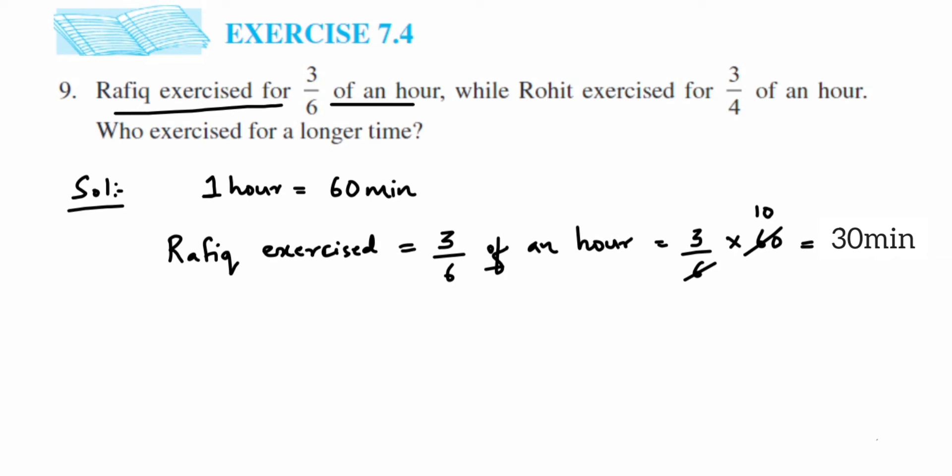Now we'll do for Rohit. So here we have given for Rohit that he exercised for 3 upon 4 of an hour. So Rohit exercised will be equal to 3 upon 4 of an hour.